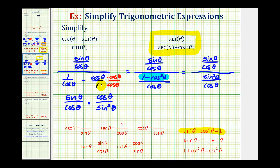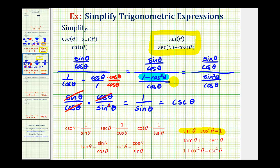Now we can see this is going to simplify nicely. Cosine theta over cosine theta simplifies to one. Here we have two factors of sine theta and one factor of sine theta — one factor simplifies to one, leaving one factor of sine theta in the denominator. So we have one over sine theta. We do have it in terms of one trig function, but it's still in fraction form. Since one divided by sine theta equals cosecant theta, we'll write this as cosecant theta. So the given expression simplifies to cosecant theta. I hope you found this helpful — we'll look at some more examples in the next few videos.